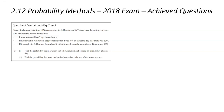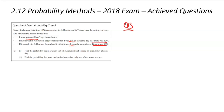Now the last set of achieve questions from the 2018 exam — question number three. Nancy is buying data from NIWA about Ashburton and Tamaru over the past seven years. She's found that it is wet on 45% of days in Ashburton. If Ashburton was wet, Tamaru was also wet 63% of the time. If Ashburton was dry, Tamaru was dry 88% of the time. The fact we're considering two things one after the other suggests we're looking at a probability tree.